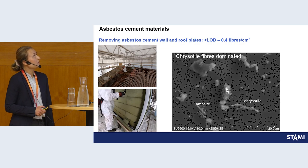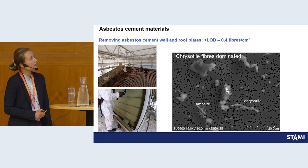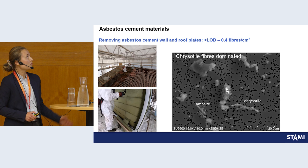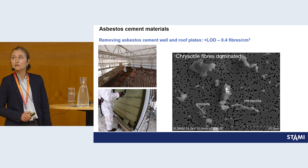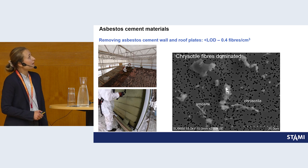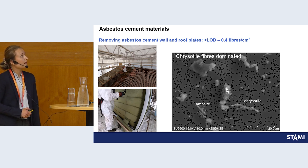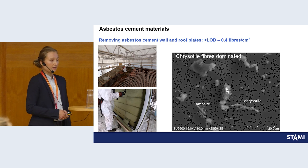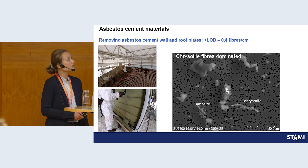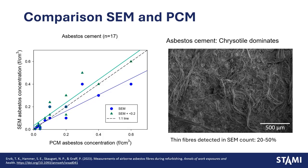For the outdoor materials, we had the most samples. SEM counts ranged from below the detection limit up to 0.4 fibers per cubic centimeter. Chrysotile fibers dominated, but amosite and crocidolite were also found. We had both roof and wall plates, and some samples were collected inside a tent, so concentrations may have been higher in those cases. Looking at the SEM versus PCM comparison, the correlation was not as good as for the insulating boards.